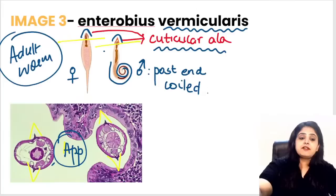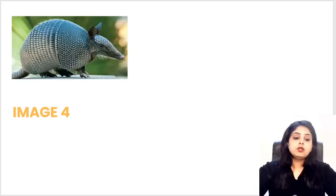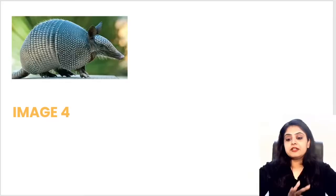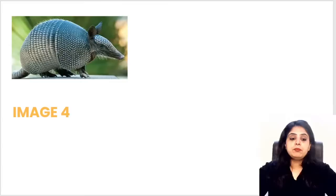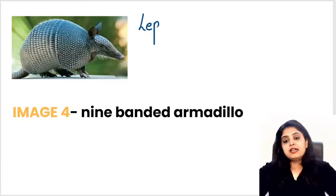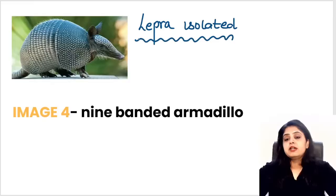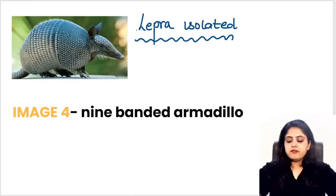Enterobius is totally done. Coming to image number four — this is an animal identification question. You can count nine bands on this animal. This is the nine-banded armadillo — important for leprosy. The nine-banded armadillo is used for isolation of the lepra bacillus, because Mycobacterium leprae cannot be cultured on standard culture media.